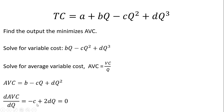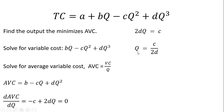That is our derivative. Setting it equal to zero, we solve for Q by moving C over to the right-hand side, then dividing through by 2D. This is the output level that minimizes average variable cost: Q = C divided by 2D.